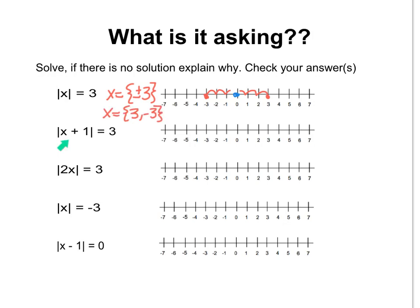The second one says the absolute value of x plus 1 equals 3. This means what number, increased by 1, is 3 units from zero? I could think of this as x minus negative 1 equals 3. When I shift the whole thing down by 1, I can look at 3 units to the right and 3 units to the left. So my solutions here are negative 4 and positive 2. We could always check that: negative 4 plus 1 is negative 3, and the absolute value of that is 3. And 2 plus 1 is 3, and the absolute value of that is also 3.